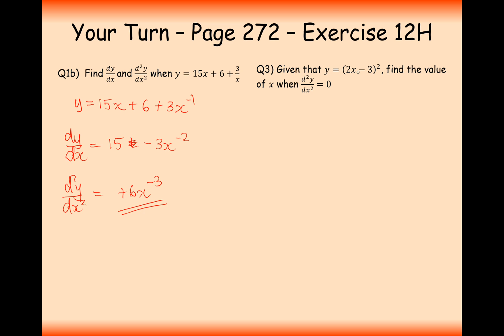Question 3: given that y equals 2x minus 3 all squared, find the value of x when the second derivative equals 0. The first thing to do is expand the brackets, giving 4x squared minus 12x plus 9, and then differentiate.